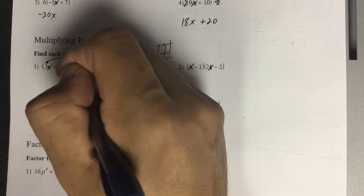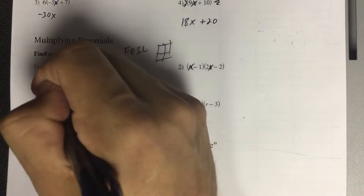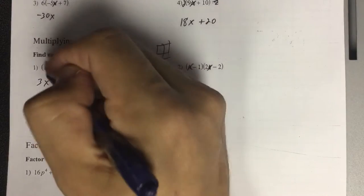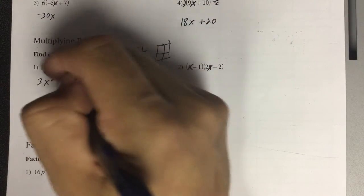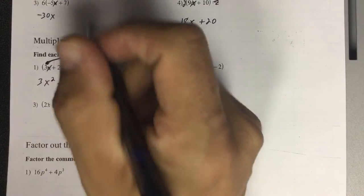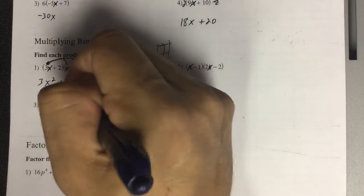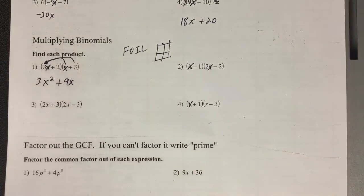So 3x times x is 3, x times x is x squared. 3x times positive 3, 3 times 3 is 9, so that's positive 9. And then you still have the x.